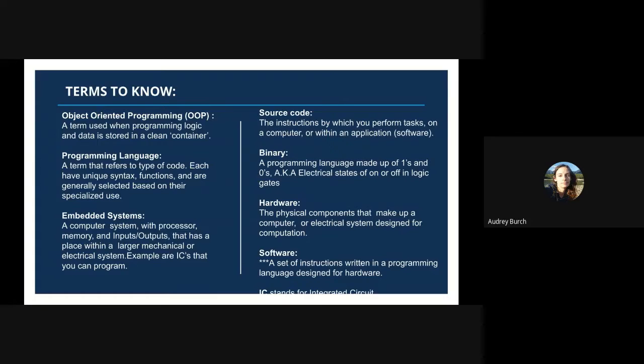Programming language is a term that refers to the type or flavor of code that you are writing in. Each programming language will have its own unique syntax and functions, and they are generally written based on their required use or specialized use. For example, JavaScript runs on internet browsers with HTML, and so that is its specialized use, but JavaScript is not limited to running programming only in a web browser.